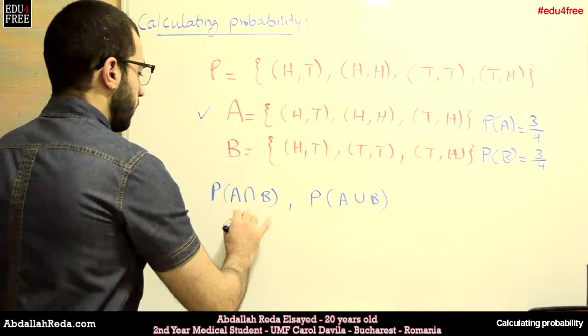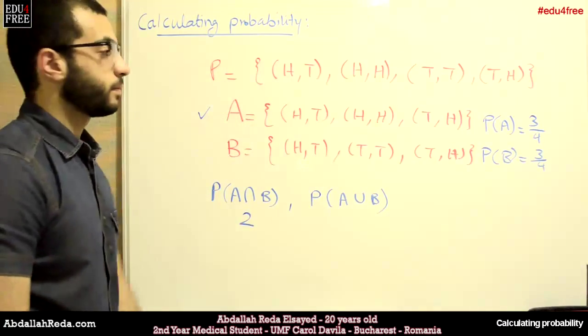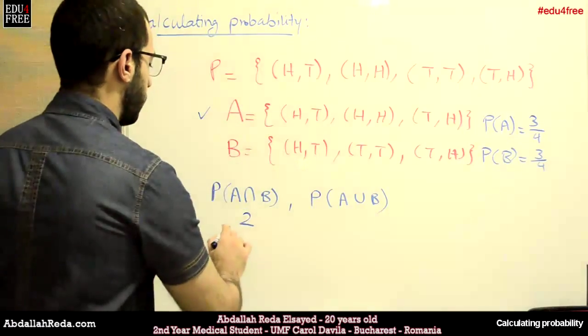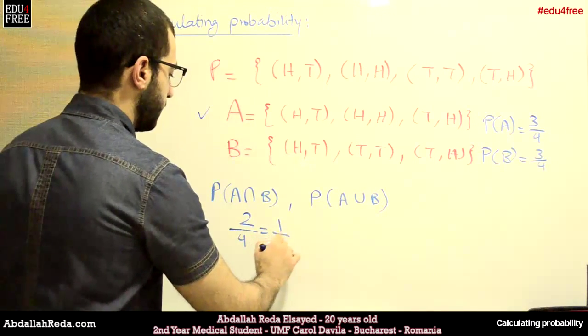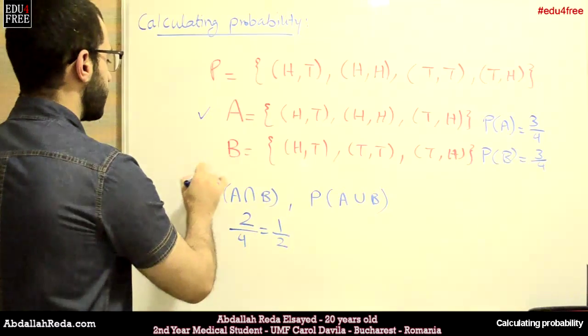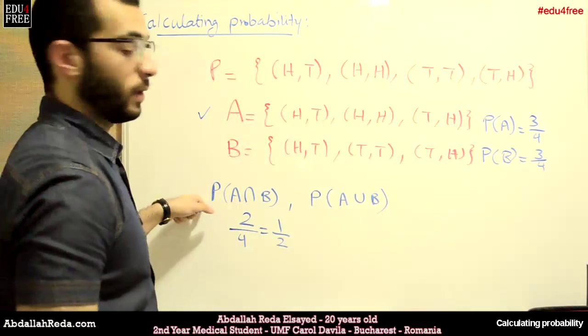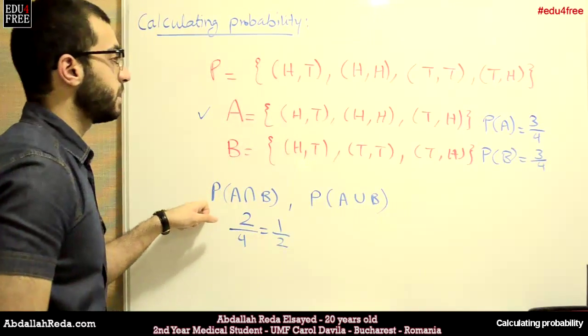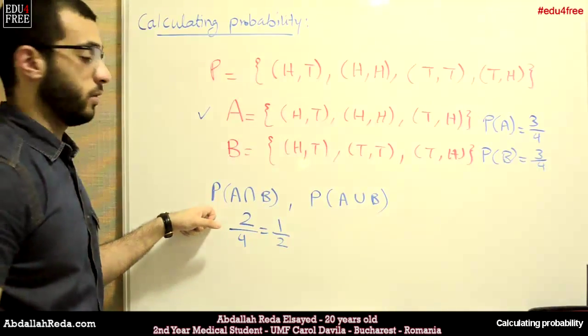So 2 divided by 4 is half. So this event represents 50% probability. Half of the time, this event can occur.